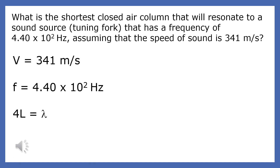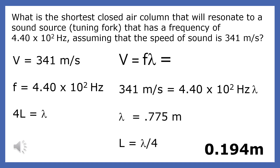What is the shortest closed air column that will resonate to a tuning fork with a frequency of 4.4 × 10² Hz, assuming the speed of sound is 341 meters per second? We use the velocity equation to solve for the wavelength. For the smallest tube, that occurs at the fundamental, where the wavelength is 4L and the length is a quarter of a wavelength. Since 4L equals the wavelength, we take the wavelength and divide it by 4 to get the length of the tube.